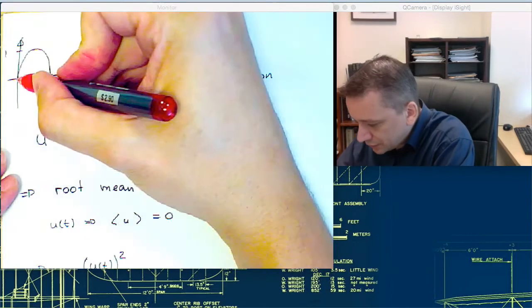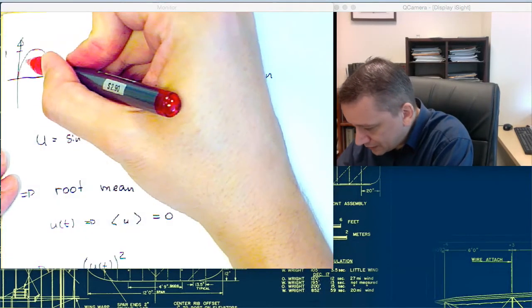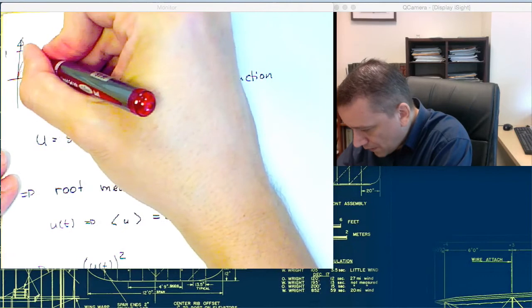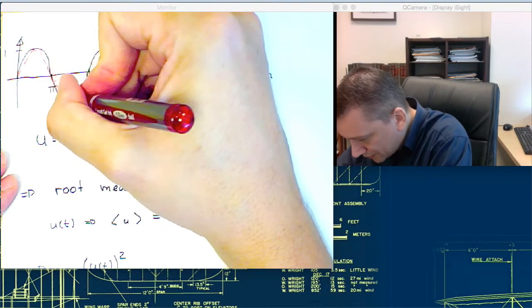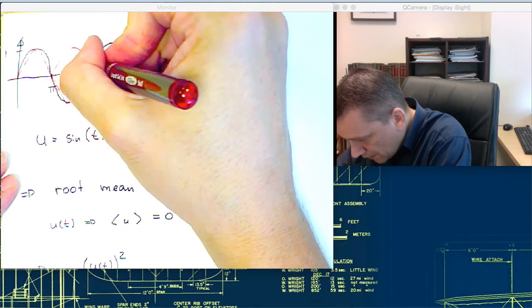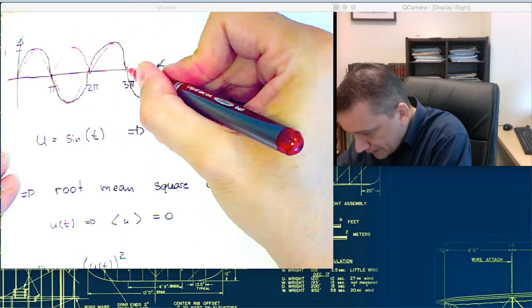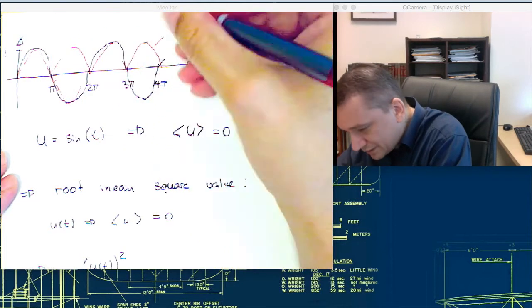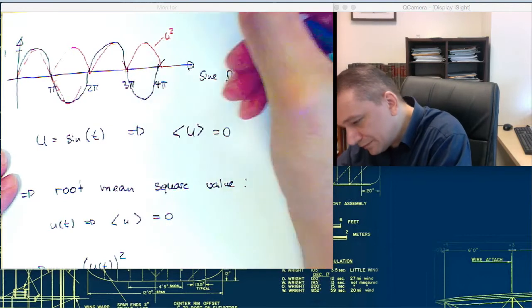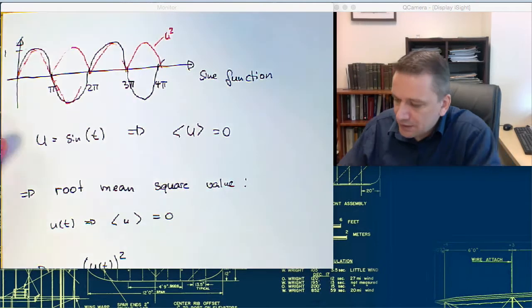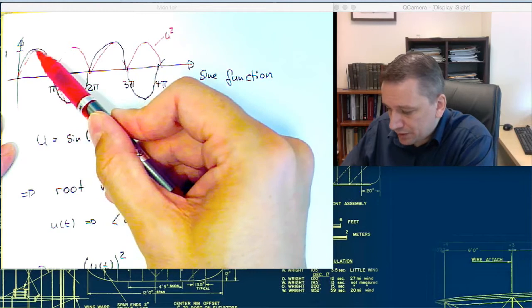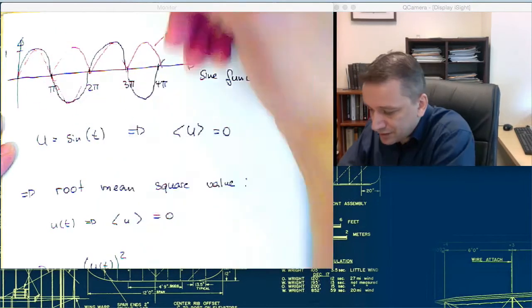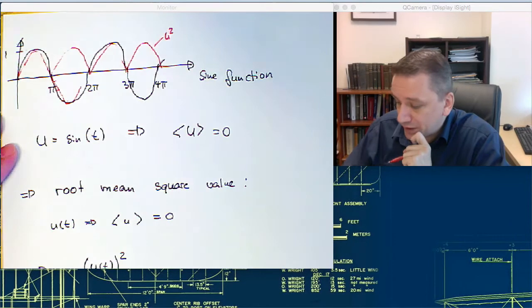So if you do a square, essentially what you get is something like this. This one is u square. If the value, for example, here is going to be even larger, then you see that the fluctuations are going to be even larger than that. So essentially what you do, you're flipping over the function over into the positive.